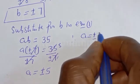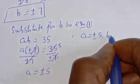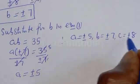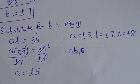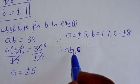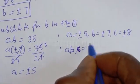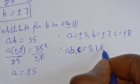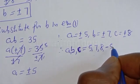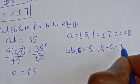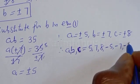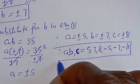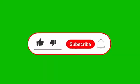Therefore A is equal to plus or minus 5, B is equal to plus or minus 7, and C is equal to plus or minus 8. The final answers are (A, B, C) = (5, 7, 8) or (−5, −7, −8). That is the final answer.